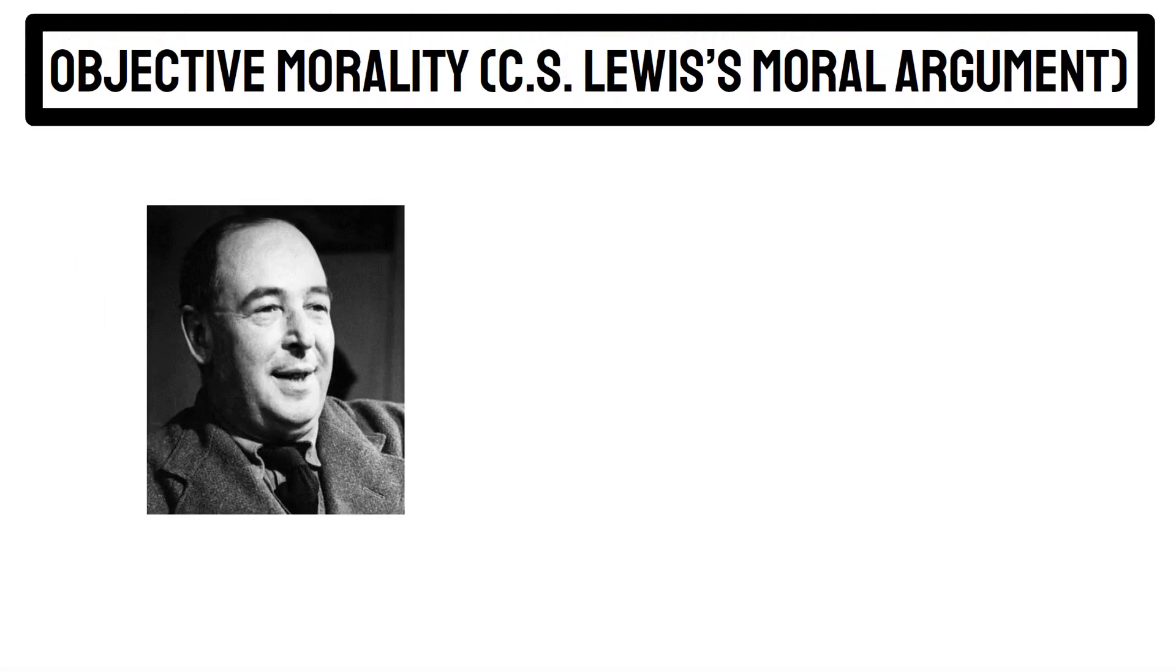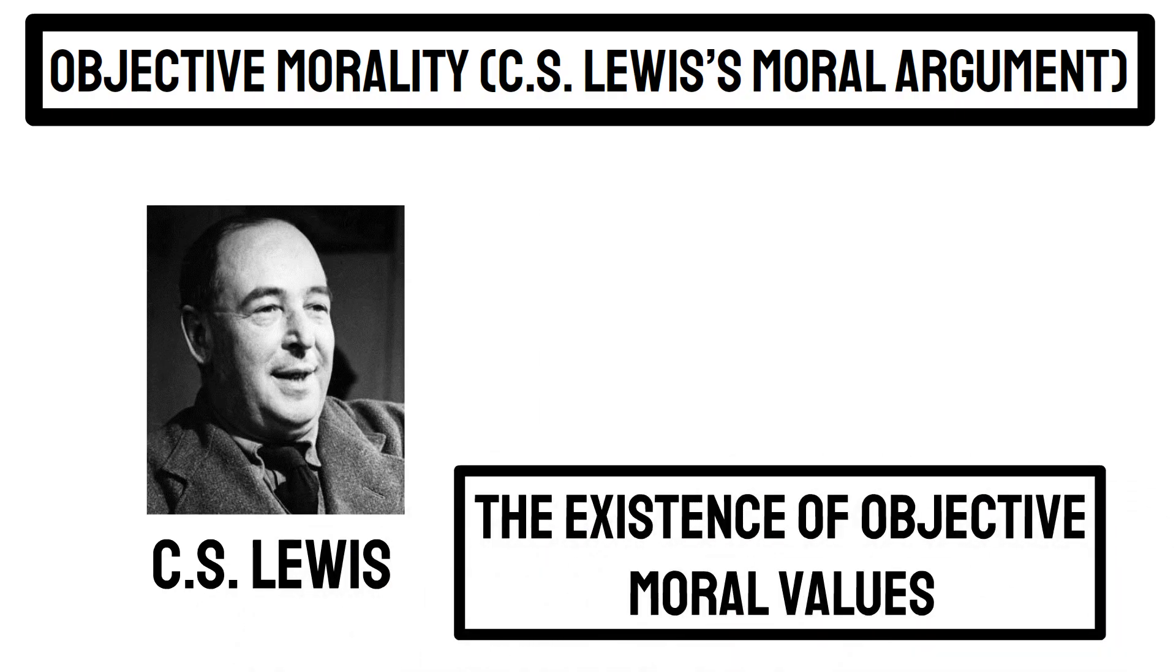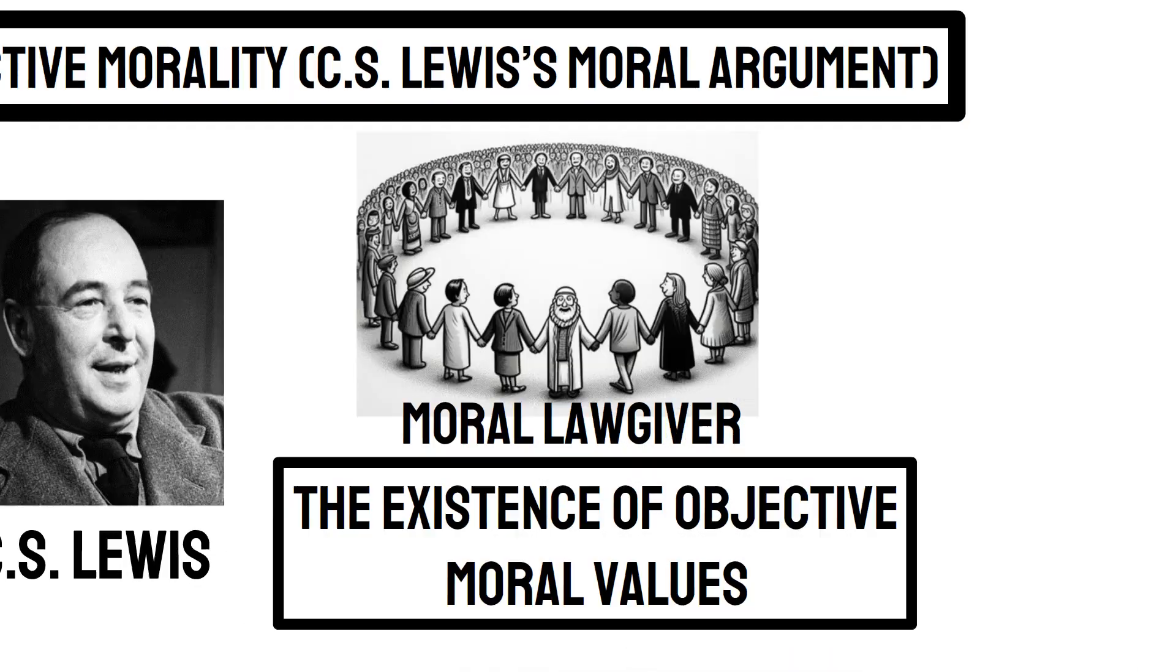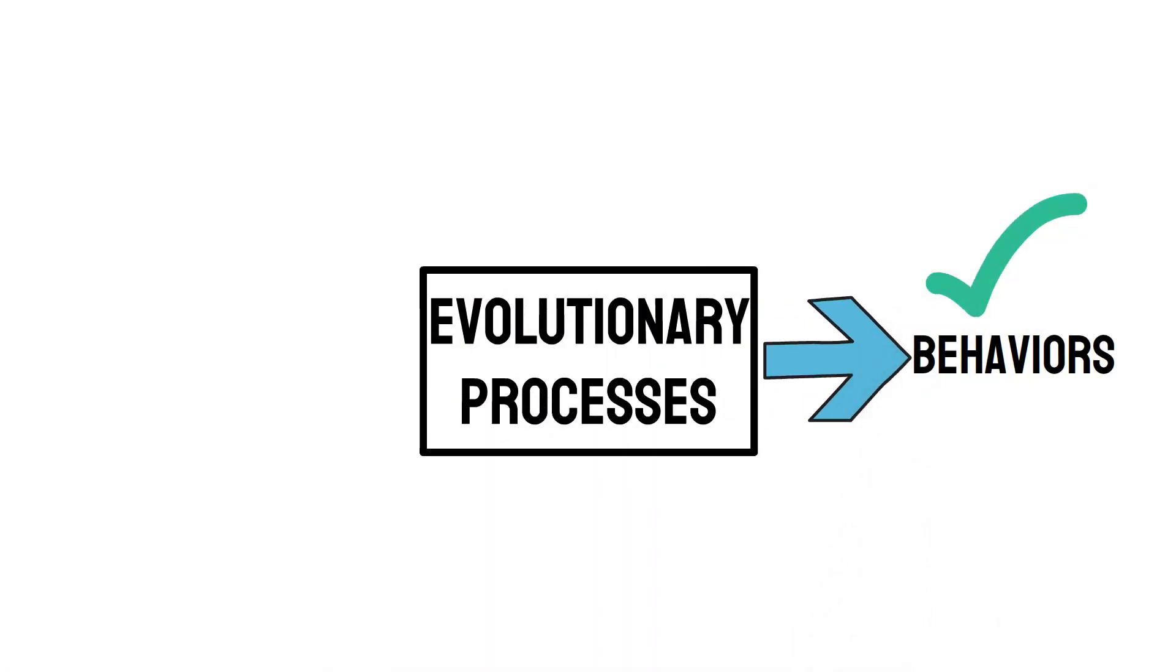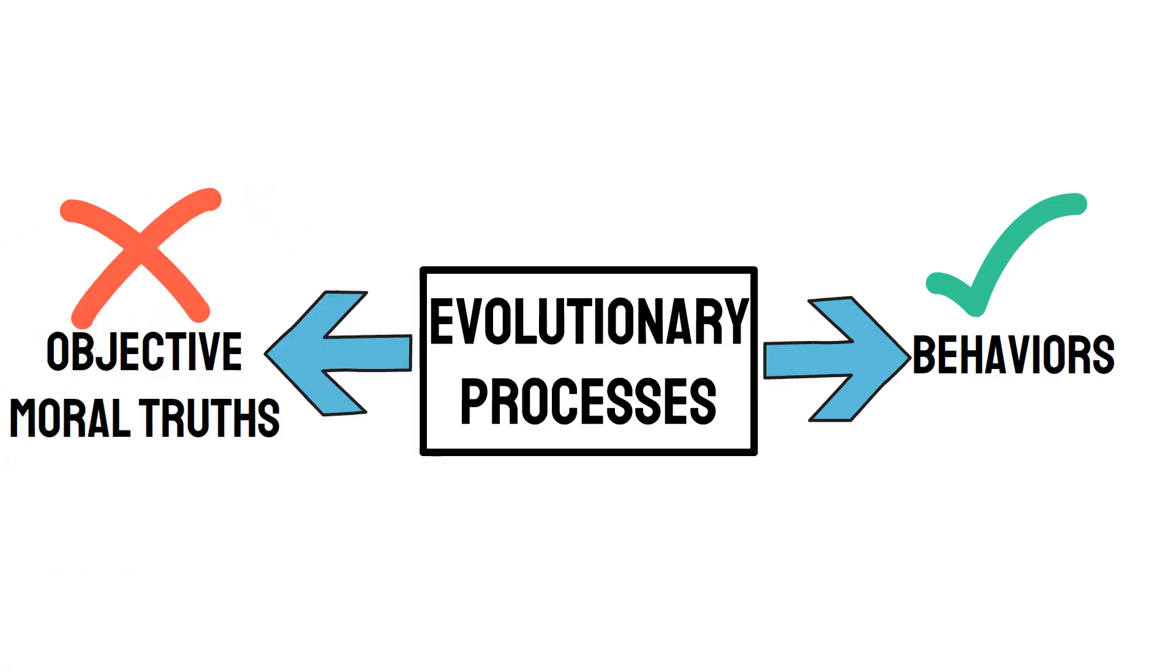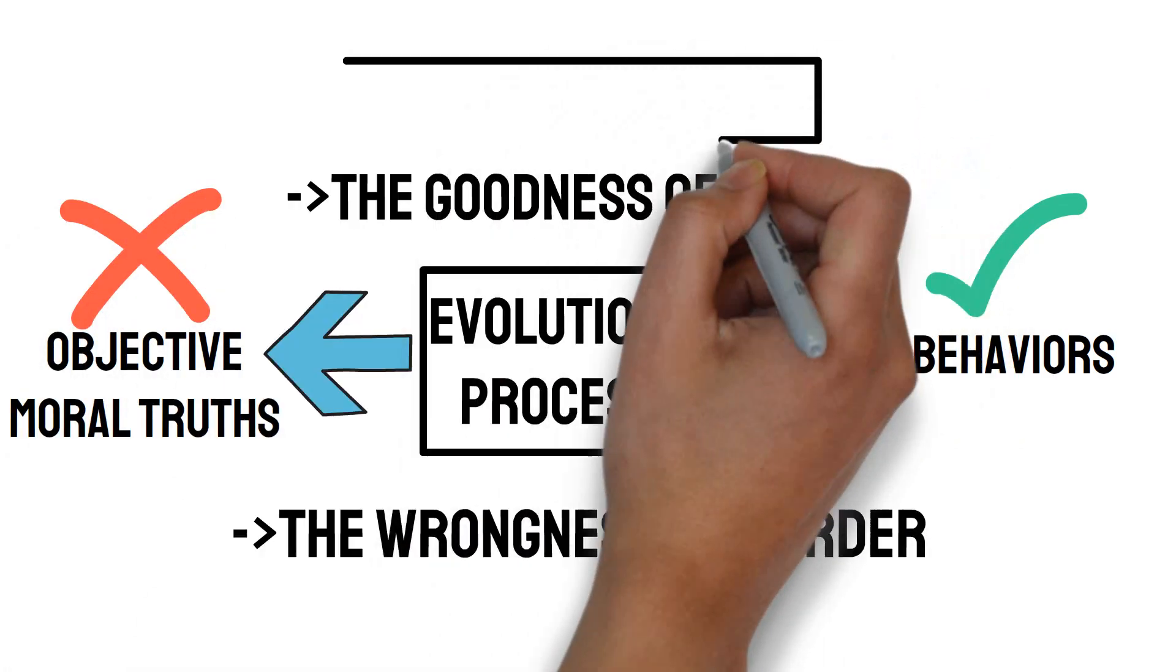Again, there's a couple counter-arguments here. Objective morality. Theistic thinkers like C.S. Lewis argue that the existence of objective moral values requires a moral lawgiver. While evolutionary processes may explain some behaviors, they cannot account for objective moral truth, such as the wrongness of murder or the goodness of love, which transcends survival advantages.